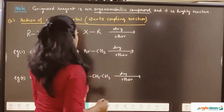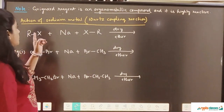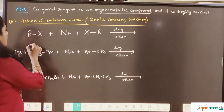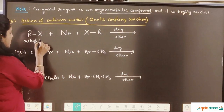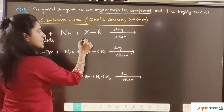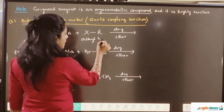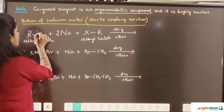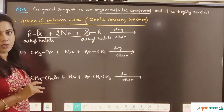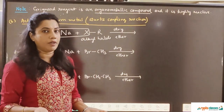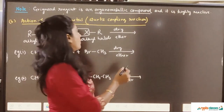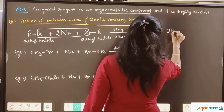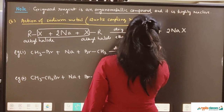Now we move on to the next reaction with metals — the reaction with sodium metal. This reaction is called the Wurtz coupling reaction, very, very important. Here we have taken an alkyl halide RX reacting with sodium and the same alkyl halide RX again. We take two atoms of sodium and take out two NaX, because alkali metals have a lot of activity towards halogens. The halogen leaves with sodium, and the remaining R and R couple together — that is why this is called a coupling reaction — giving R-R, which is an alkane.